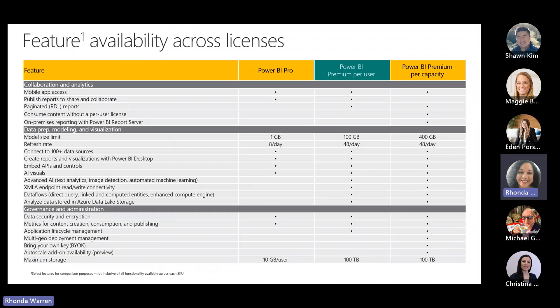This is a complete comparison of what you get with the various licenses. Your pro licenses — the creator licenses — have the ability to create mobile application access and build models, with a limited refresh rate since they're developer and creator users. When you get into capacities, you can see that capacity users have a lot more capabilities. For example, when you purchase a capacity, everyone in the organization gets access to the content. You can create paginated reports, and there's no need for a separate on-premise server — it's already embedded within the capacity.